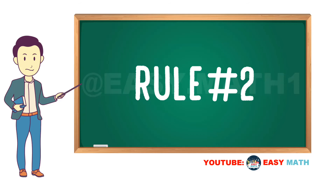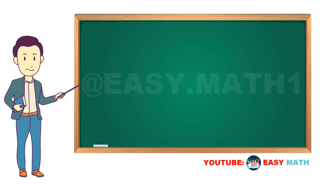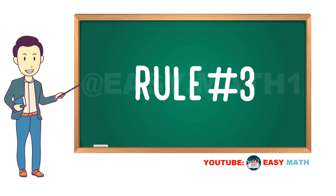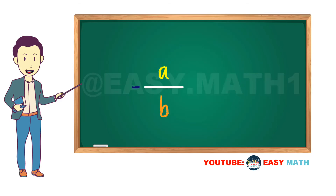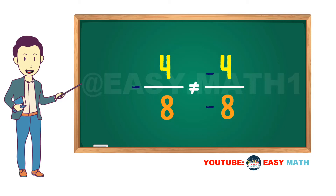Rule number two: negative a divided by negative b is equal to a divided by b. For instance, negative seven divided by negative three is equal to seven thirds. Rule number three: negative a divided by b is not the same as negative a divided by negative b. For example, negative four eighths is not equal to negative four divided by negative eight.